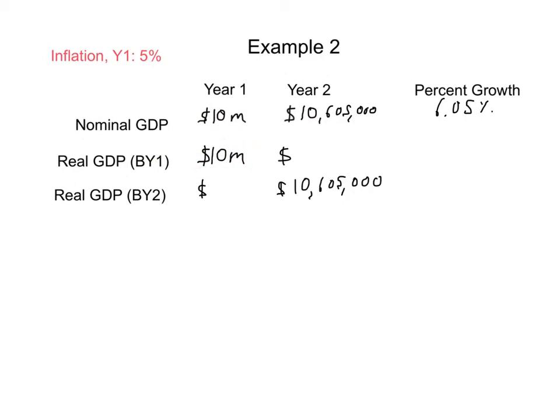Now, to find year two real GDP, we're going to have to try to subtract out the effects of that 5% inflation that happened over the course of the year. So what we're going to do is take $10,605,000 and we're going to divide it by 1.05. And that turns out to be $10,100,000 for an actual real growth rate of 1%. Much more modest growth, right? 6.05% looks really good. 1%, not so much.